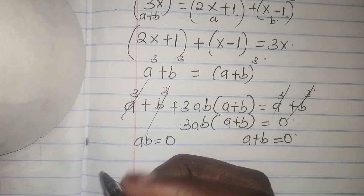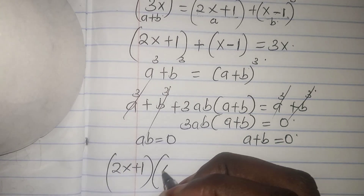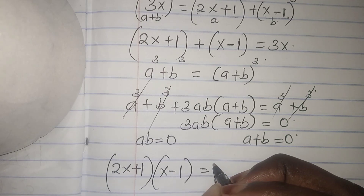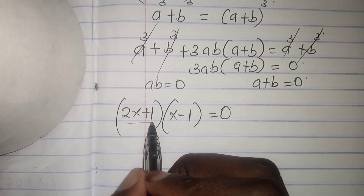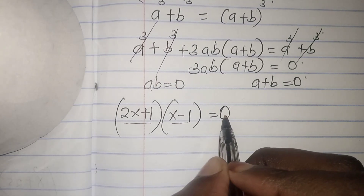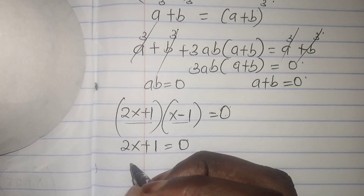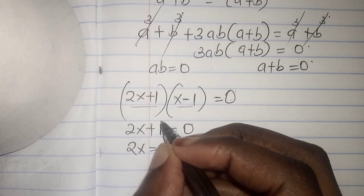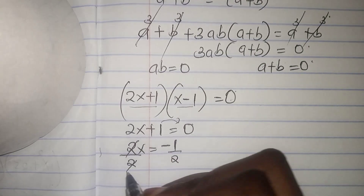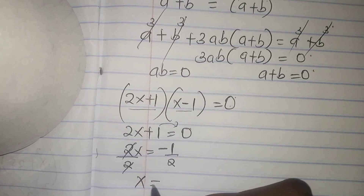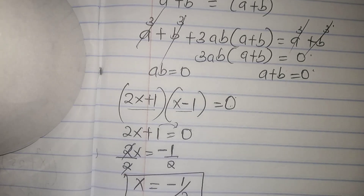From ab equals 0: (2x plus 1)(x minus 1) equals 0. Taking 2x plus 1 equals 0 gives 2x equals negative 1, so x equals negative one-half. This is our first value of x.